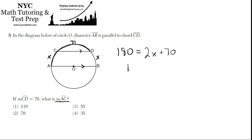So subtract 70 from both sides, 110 equals 2X. And then divide by 2 on both sides, X equals 55.